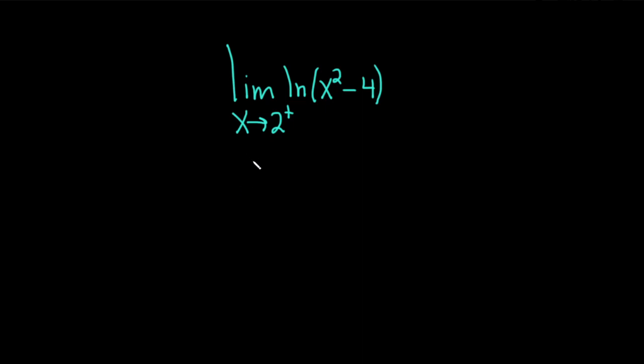Hello, in this video we're going to evaluate a one-sided limit. So we have the limit as x approaches 2 from the right of the natural log of x squared minus 4.